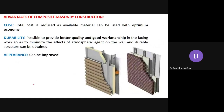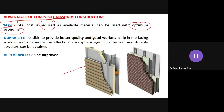Overall, the following advantages can be obtained from composite masonry construction. Cost-wise, total cost is reduced because locally available materials can be utilized on the back side to obtain optimum economy, while on the front side preferable material is used for good appearance. For durability, it is possible to provide better quality and good workmanship in the facing wall to minimize the effect of atmospheric agents, weathering, and rain on the wall.